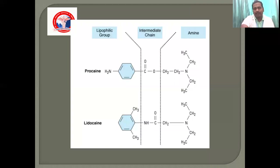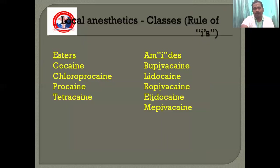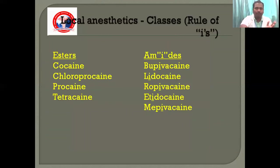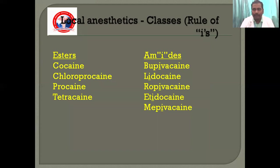Looking at the biochemical structure, you can see the lipophilic group and the amine group. According to that, local anaesthetics can be divided into two groups: the amide group and the ester group. Amide groups include bupivacaine, lignocaine, ropivacaine, and mepivacaine. Ester groups include procaine and tetracaine. Amide groups are most commonly used in day-to-day clinical practice for all kinds of regional blocks and local anaesthetics.